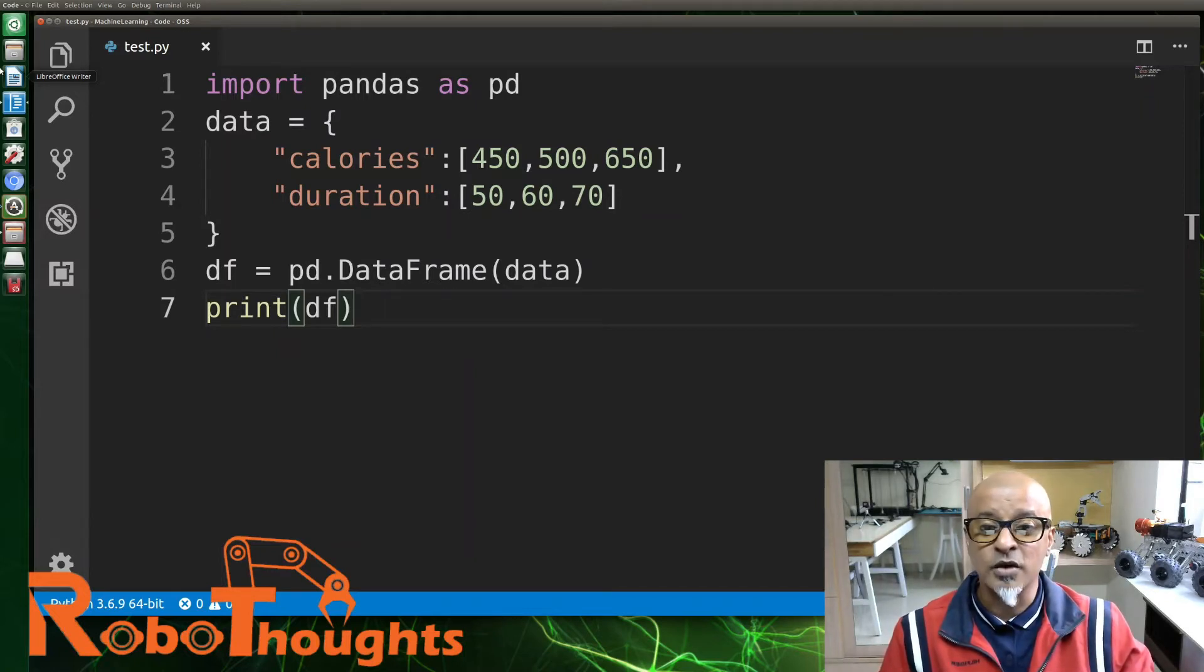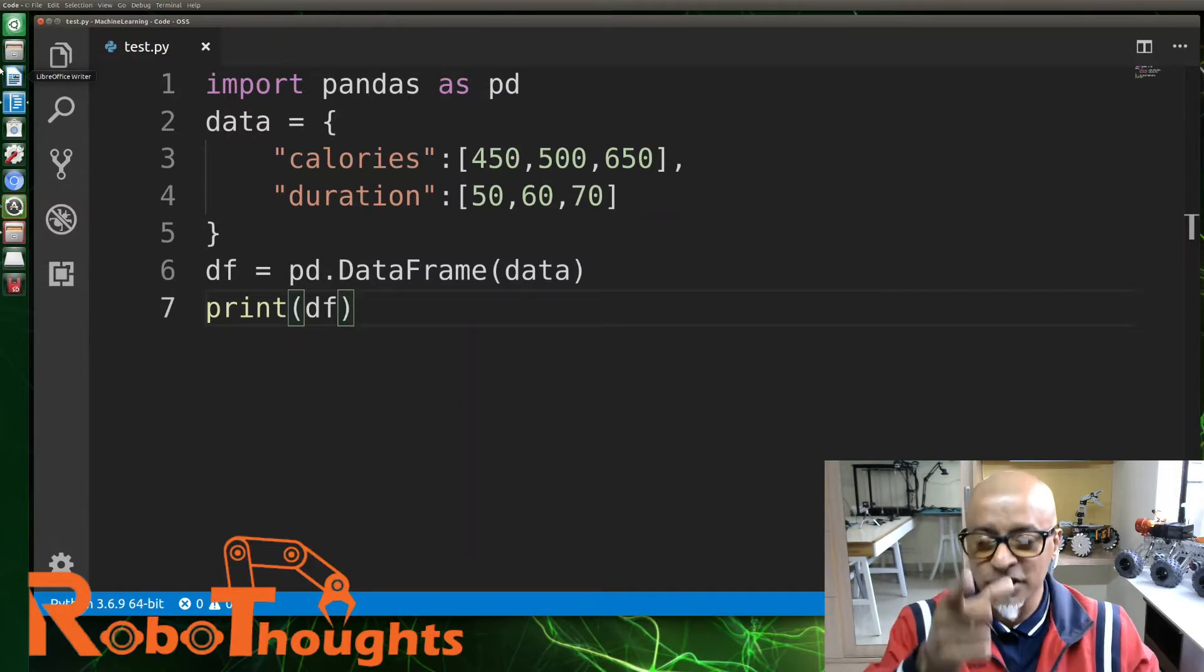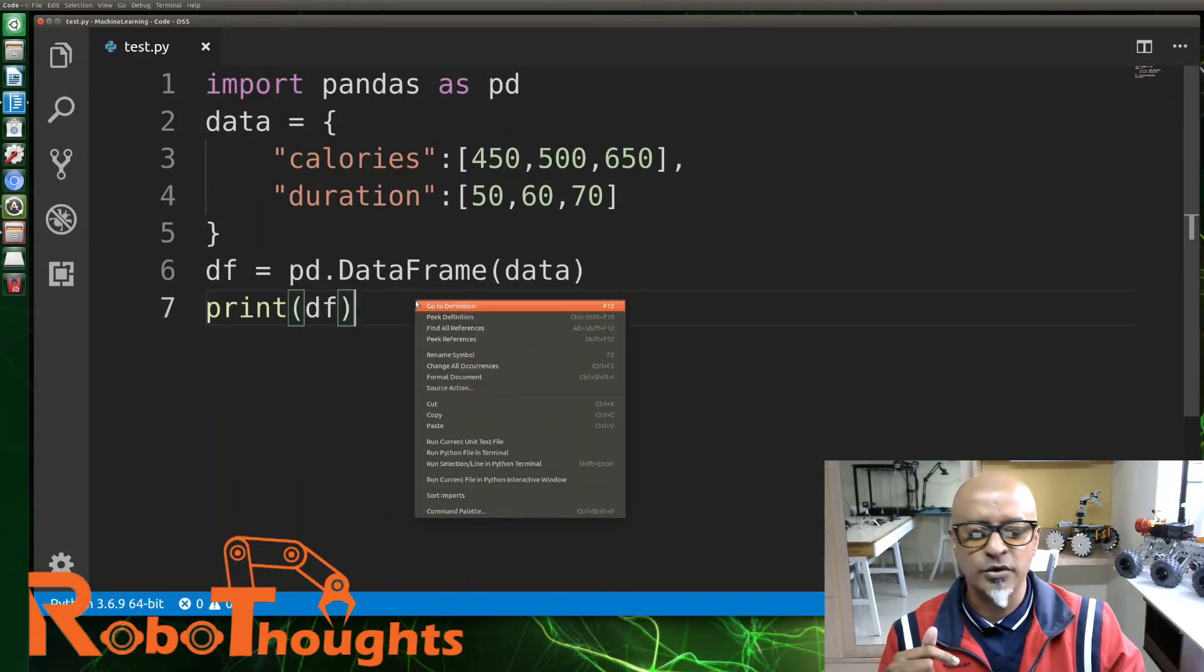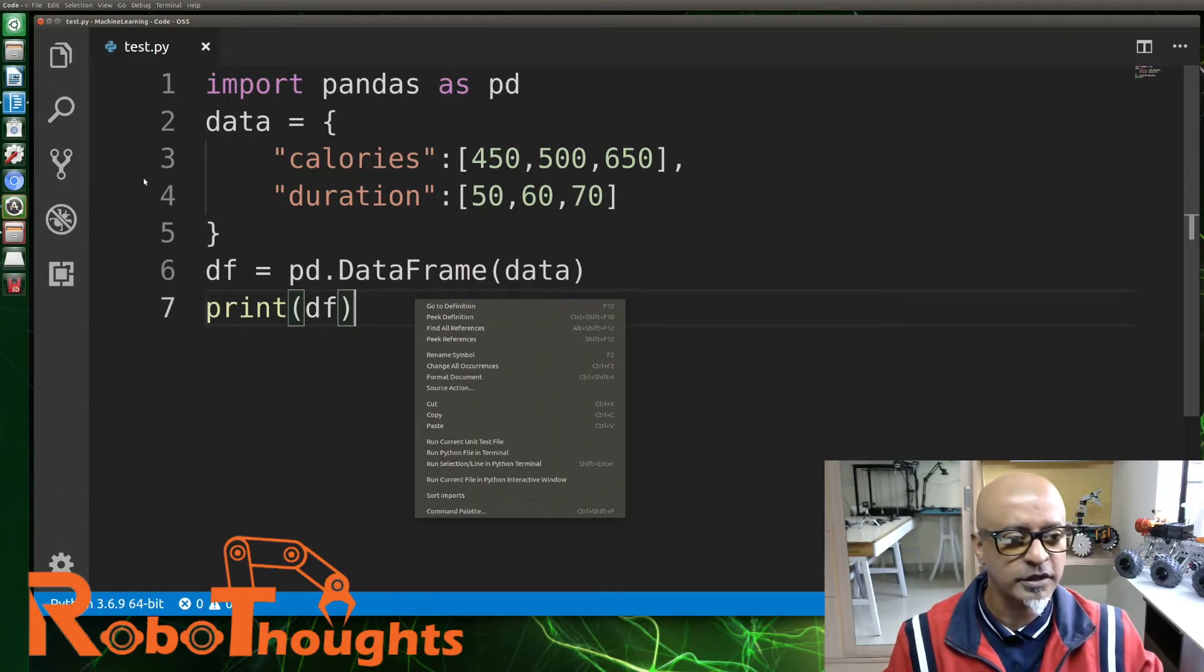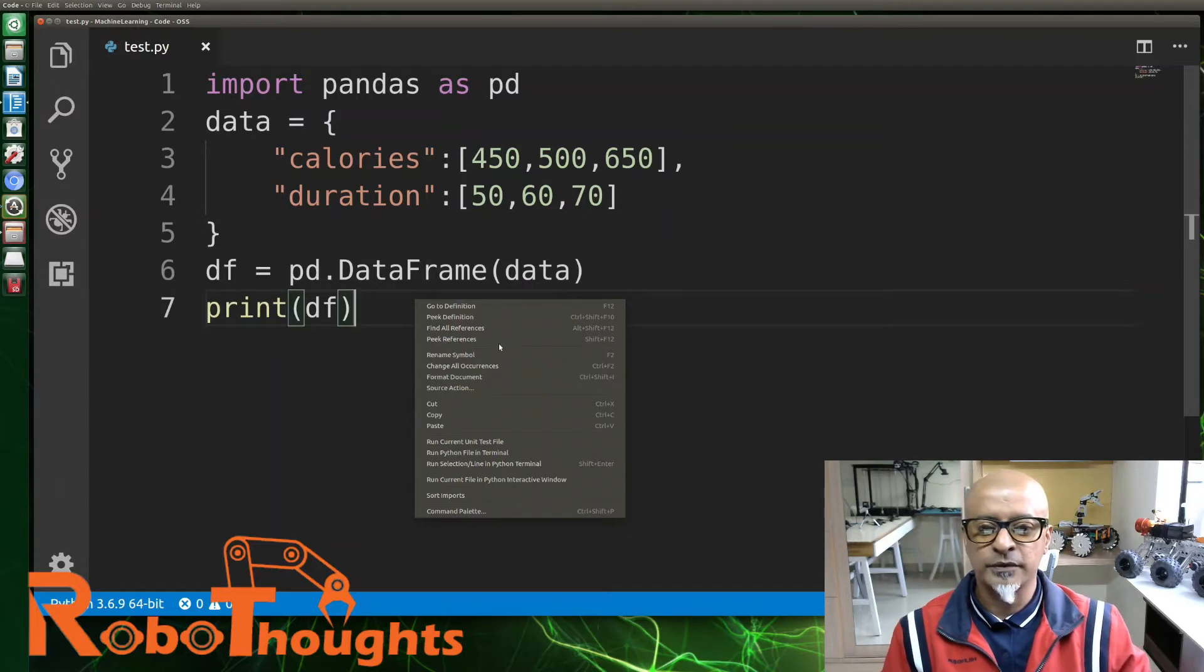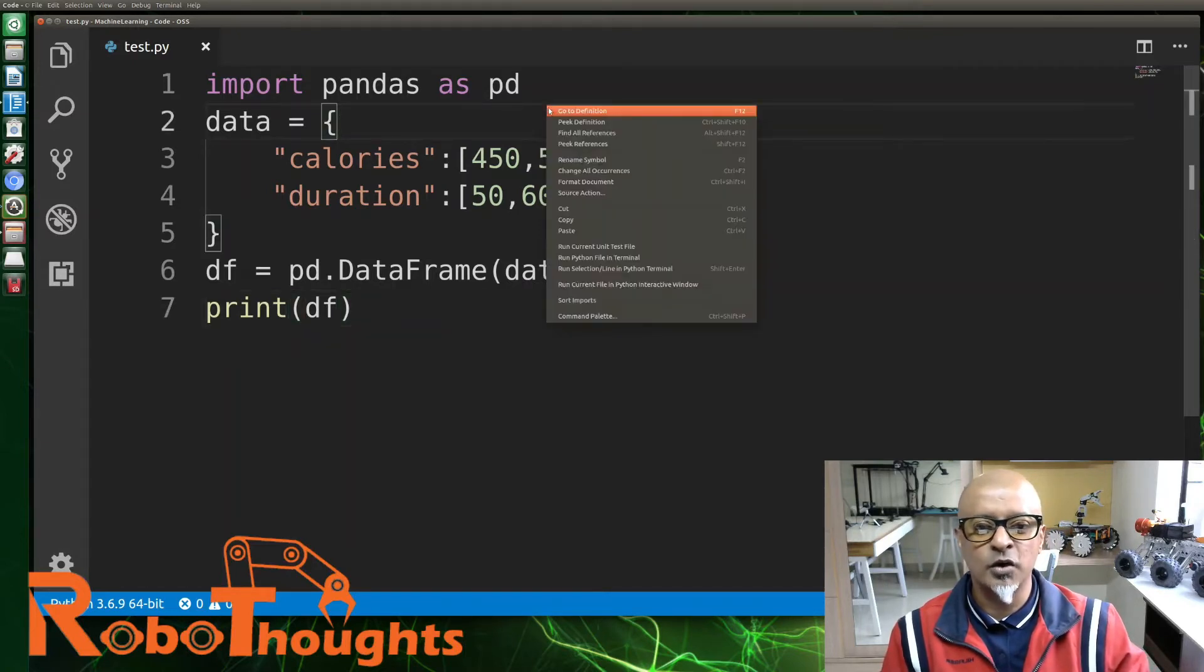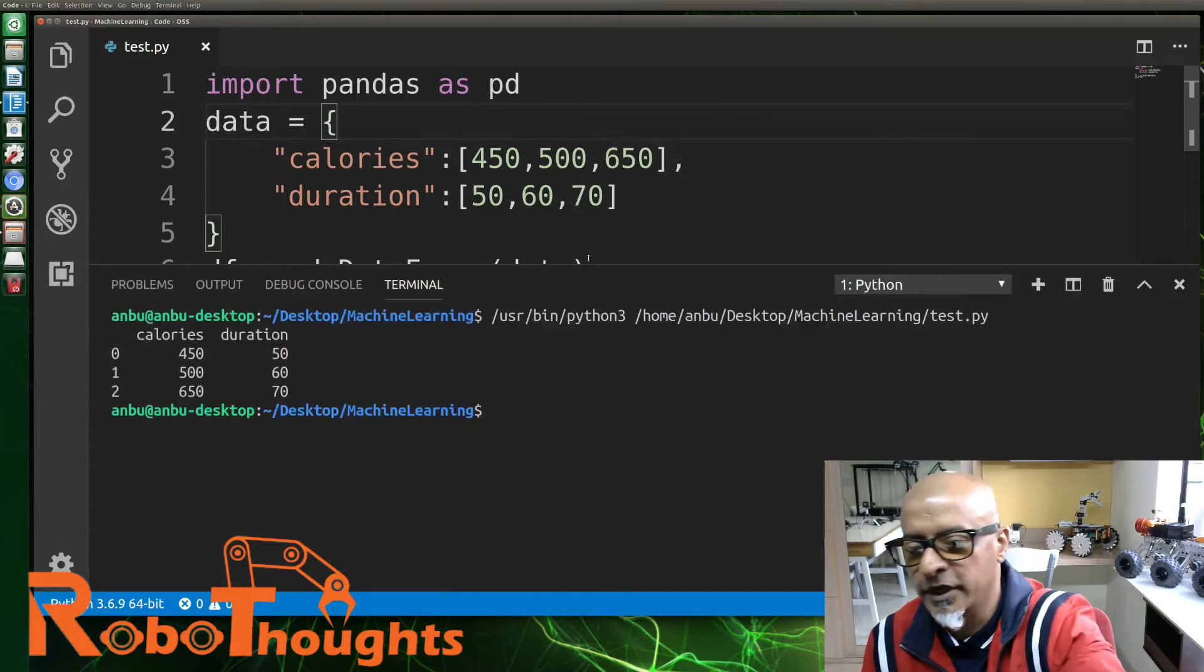Let's get into our Jetson Nano. I'm already in. Let's use the same example. If we run this, you get columns and rows. Let me just expand the screen a little bigger.